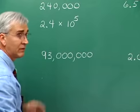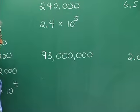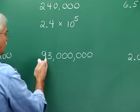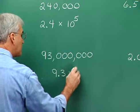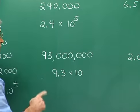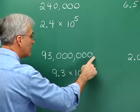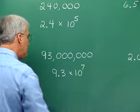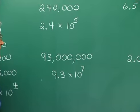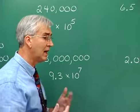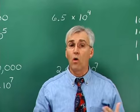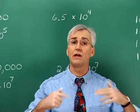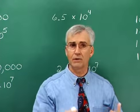Ninety-three million is a favorite in using scientific notation because it's the distance in miles from the earth to the sun. We slide that decimal to a position where there's one digit to the left of the decimal point, giving us 9.3 times ten to some exponent. The exponent is identified by counting digits — we moved three, six, seven places — giving us 9.3 times ten to the seventh.